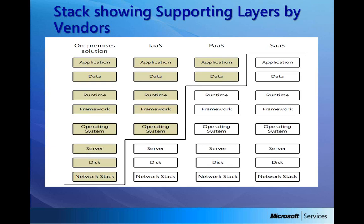With an IaaS model, you only need to take care of which operating system you want to install, the framework, runtime, which database you want to use, and the application. The rest — the three lower things in this stack — are taken care of by the service provider. For example, with Amazon providing IaaS, they take care of the networking, the servers, the disk, the connectivity, virtualization, and availability of servers around the clock. But regarding which operating system you want to install and which application you want to keep on the servers, that is completely your decision.